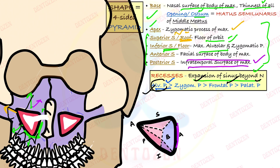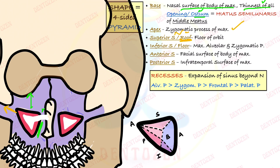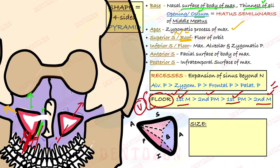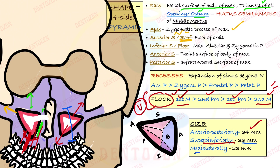Regarding the relationship of the floor of the sinus with maxillary teeth, the sinus is very close to them. The tooth closest to the floor of the sinus is the maxillary first molar, followed by the second premolar, then the first premolar, and then the second molar — a very important viva question. In terms of size, the sinus measures 34 mm anterior-posteriorly, 33 mm superior-inferiorly, and approximately 23 mm mediolaterally.